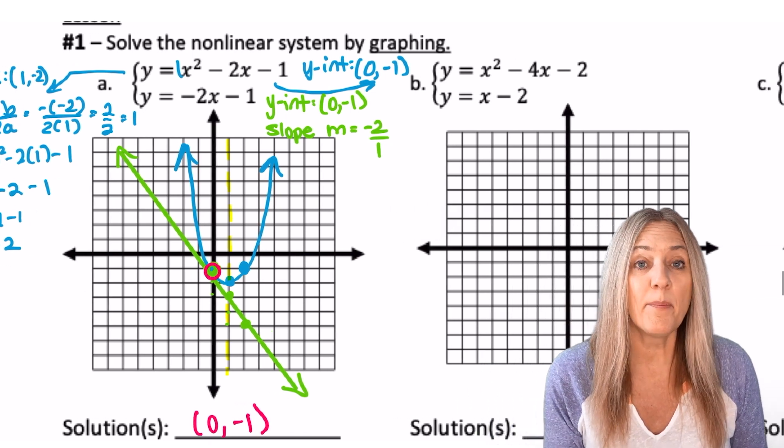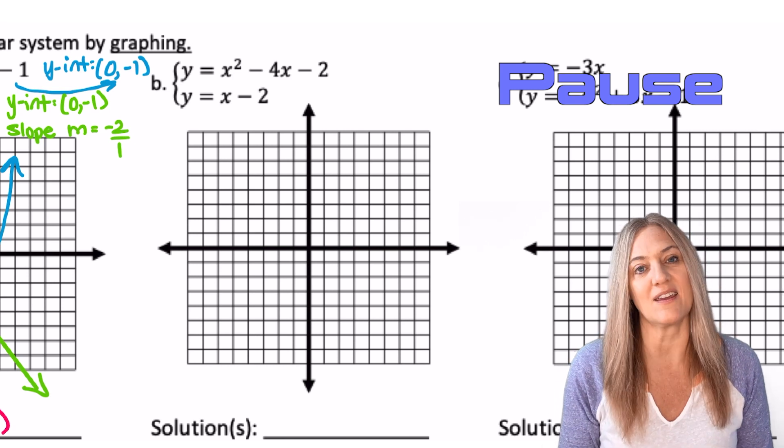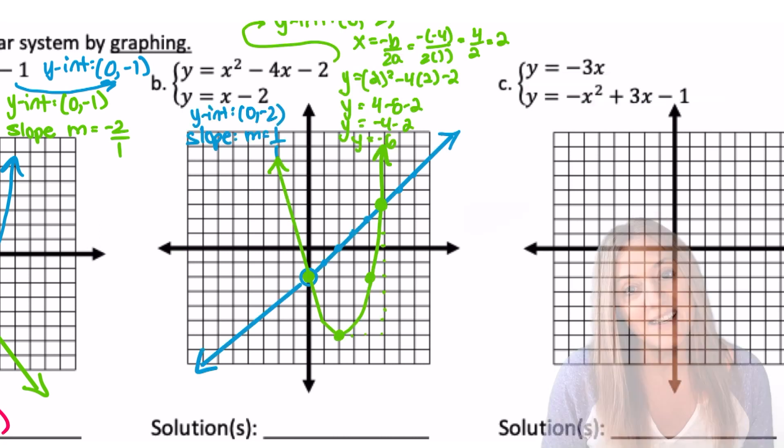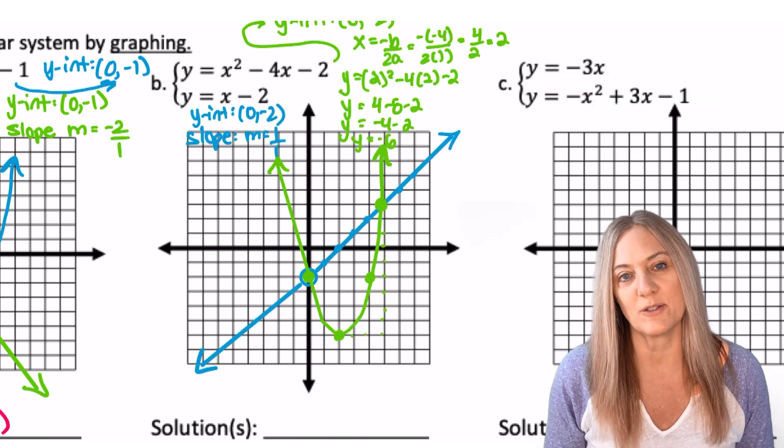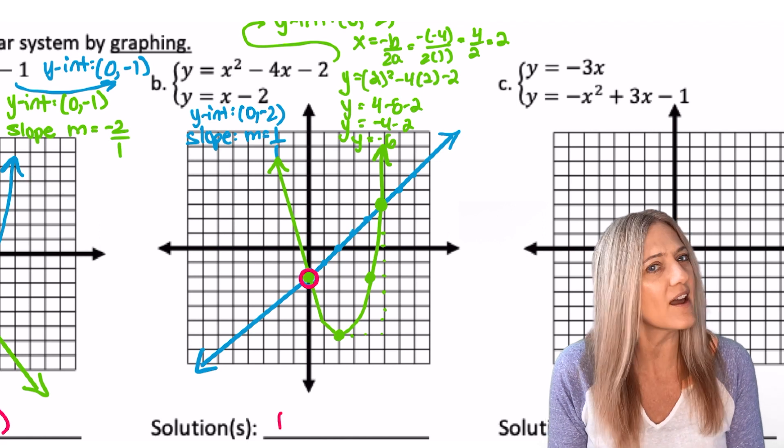Let's graph the next one. Pause, graph, and determine how many solutions you see in the next system. In example b, we see two real solutions. One is at that y-intercept again. But where is the other one?